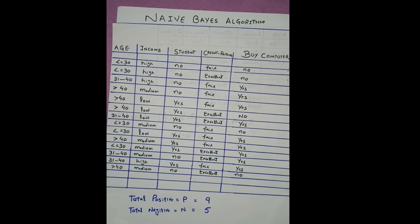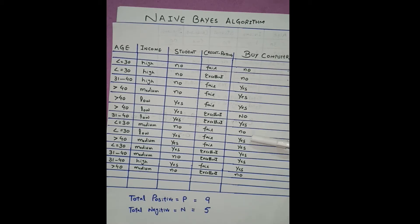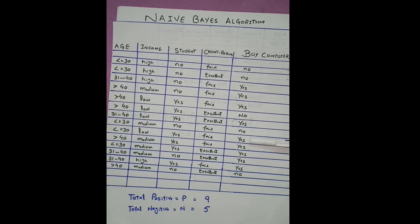This is a simple dataset. The first step is to check the two conditions in 'buys computer': one is 'no' and the second is 'yes'. First, how many times does 'no' occur? That is one, two, three, four, five — so total negative classes N equals five. Total positive we denote with P and that equals nine.